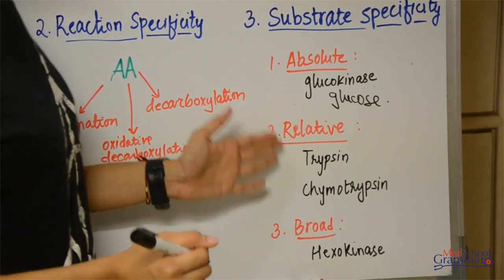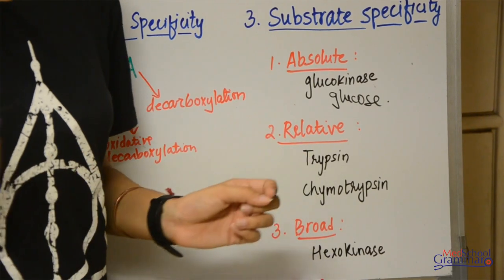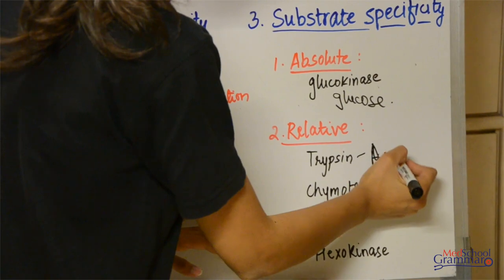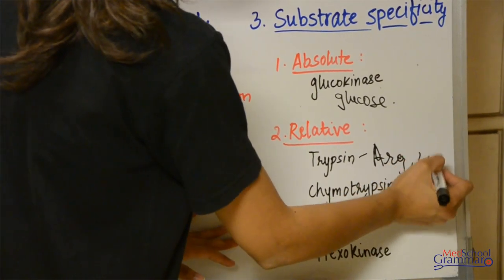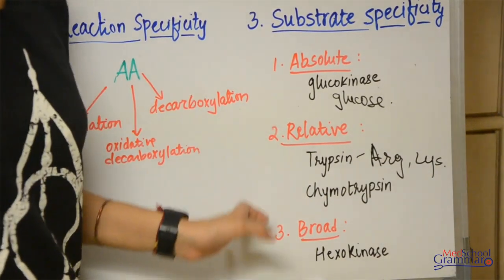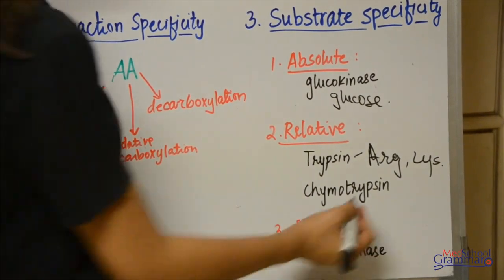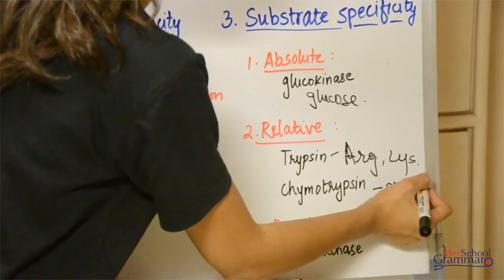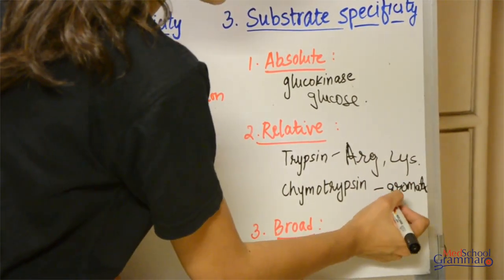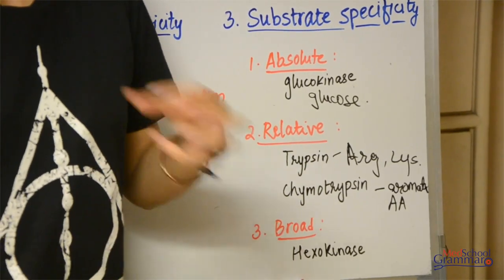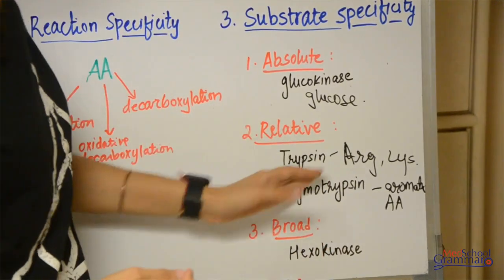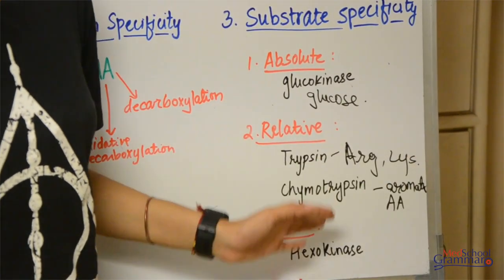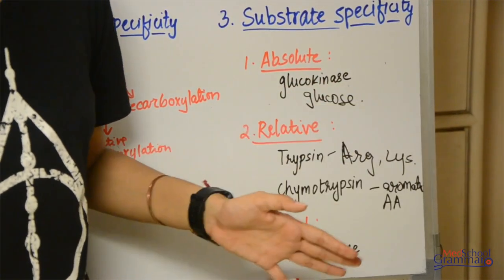For example, you have trypsin and chymotrypsin. Trypsin acts on peptide bonds related to arginine and lysine, whereas chymotrypsin is specific to aromatic amino acids. So it is not specific to any one particular amino acid or compound — it is specific to a group, that is any compound containing aromatic amino acids; chymotrypsin can act on that and break the peptide bond.